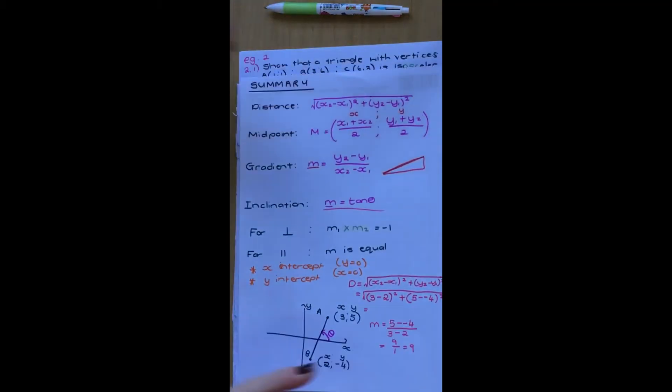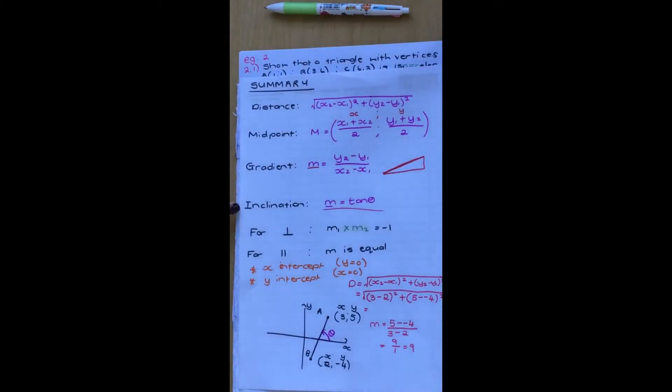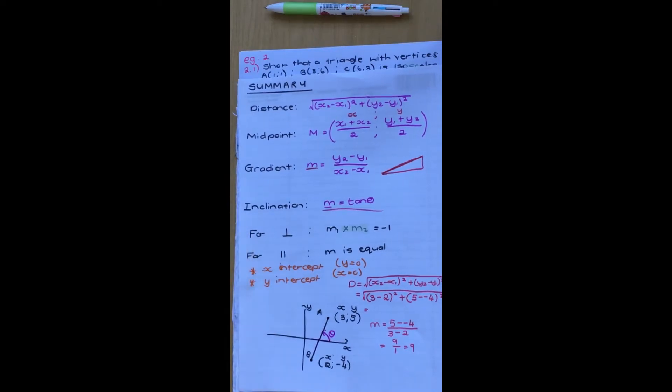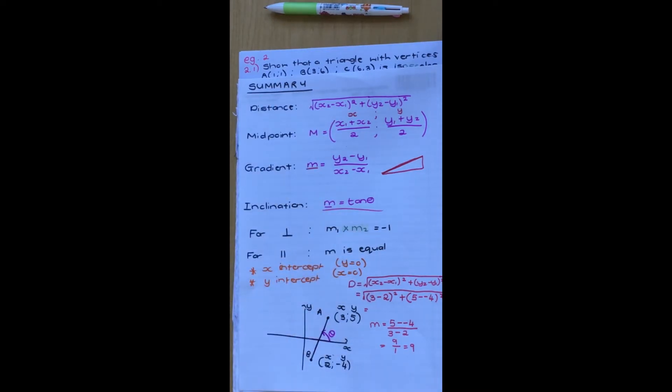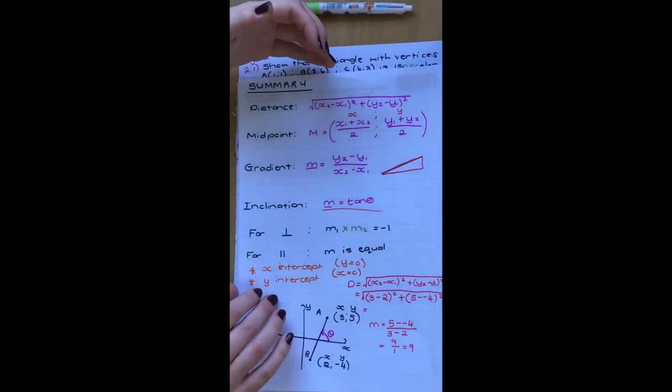Just a reminder of what we did yesterday — these are your formulas: distance, midpoint, gradient, inclination. You've got two little rules about perpendicular and parallel, and intercepts. Just a reminder of what those are, but this is basically what you will use when doing analytical geometry. So going on, this question says show that a triangle with those vertices is isosceles.